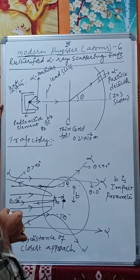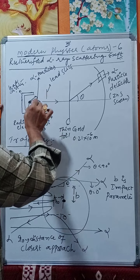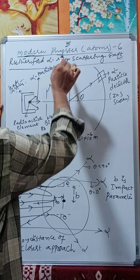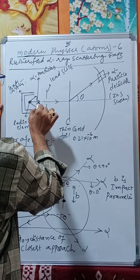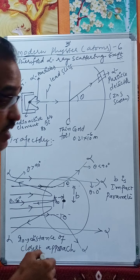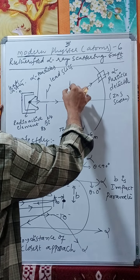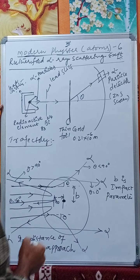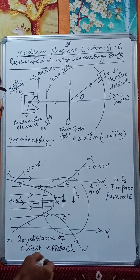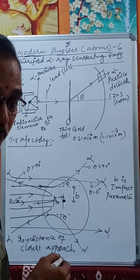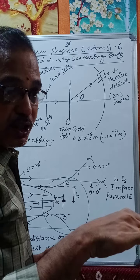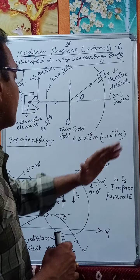Radioactive alpha particles are emitted from this radioactive nucleus — bismuth. These are then made to pass through lead slits and then made to fall on a thin gold foil. The thickness of the gold foil is 2.1 × 10⁻⁷ meters, or 0.21 micrometers — just like a thin wrapper.